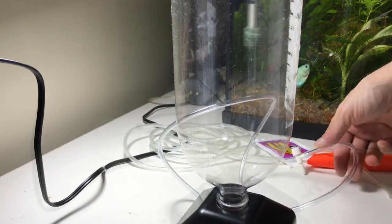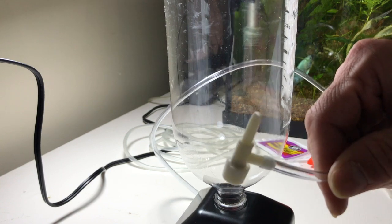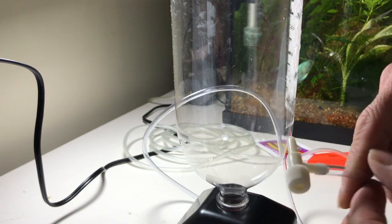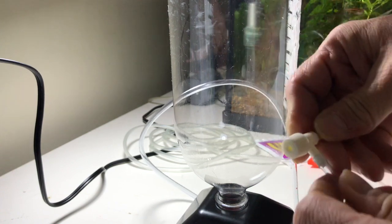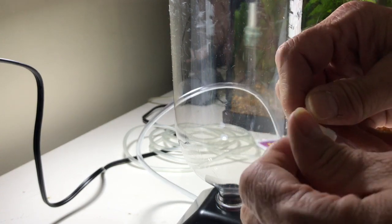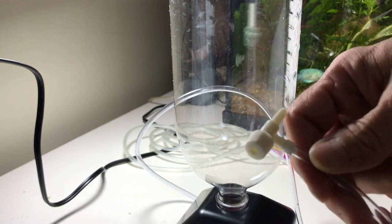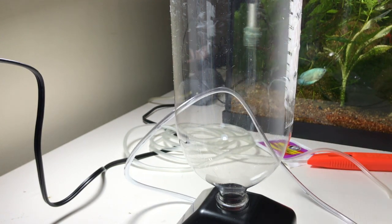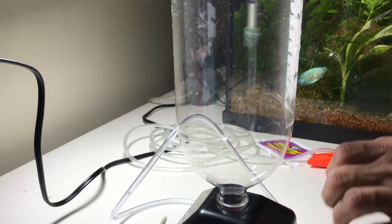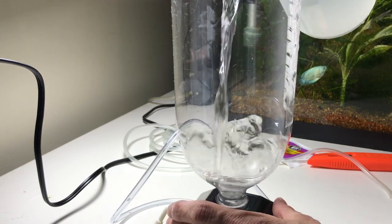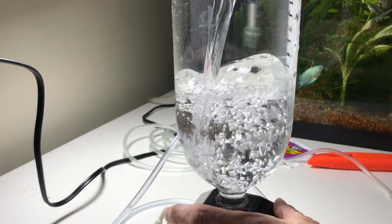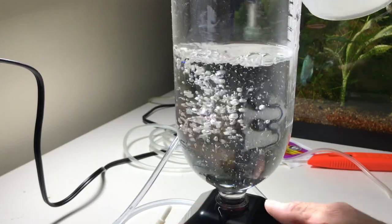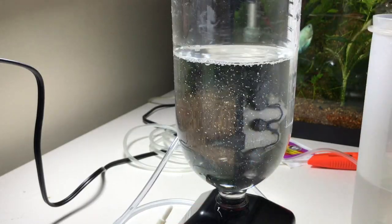One thing to remember is you'll want to go ahead and put your valve on first to make sure that your water doesn't drain out, because this is also the way you will drain out your brine shrimp. Make sure your valve is on and turned off before you add the water to the bottle. Now we'll pour the water, again about halfway.